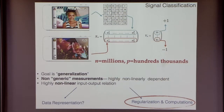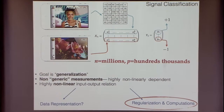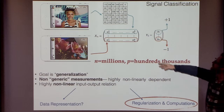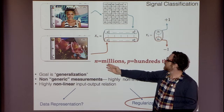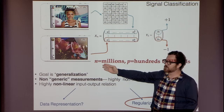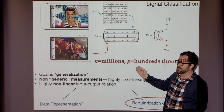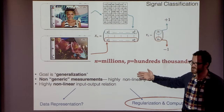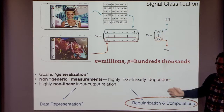To set the stage, the prototype problem I have in mind is signal classification. The goal is: you have high-dimensional input vectors and you want to classify them into two classes — a simple example being faces versus non-faces. The key point is that in current applications, n is big and p is big — millions, hundreds of thousands — both are large.